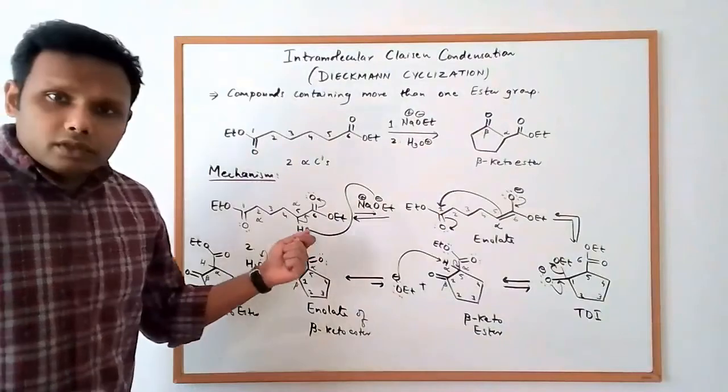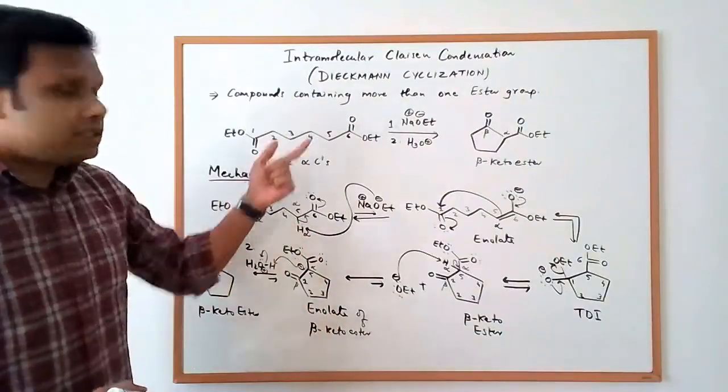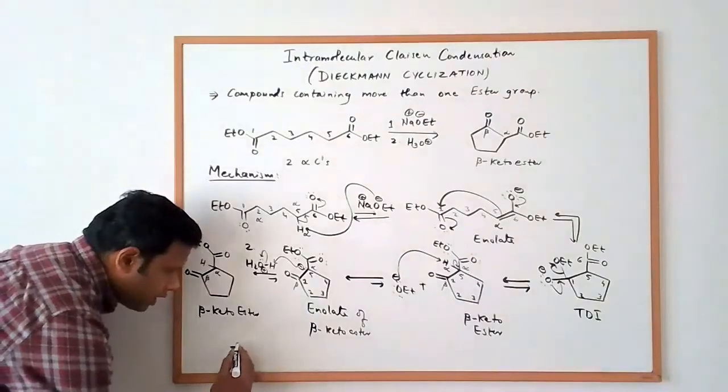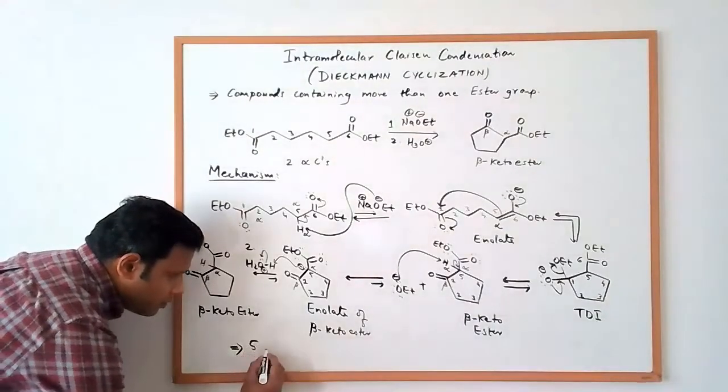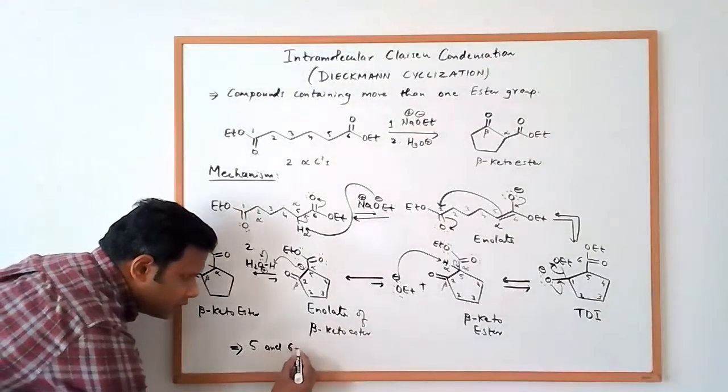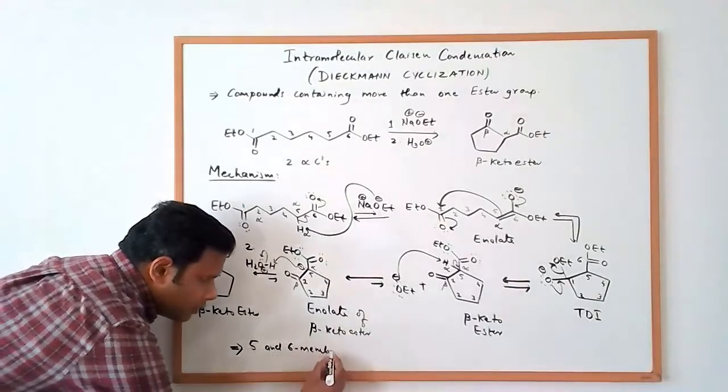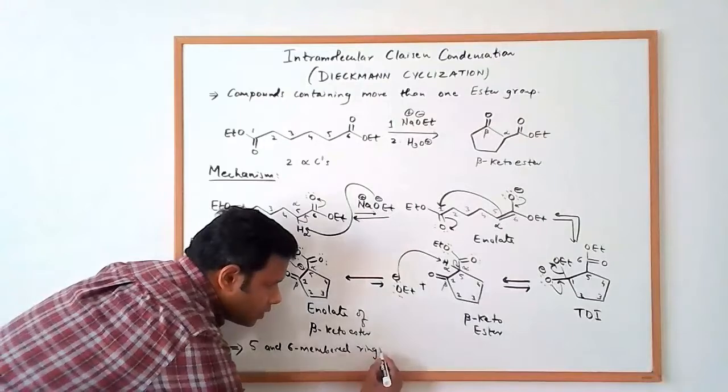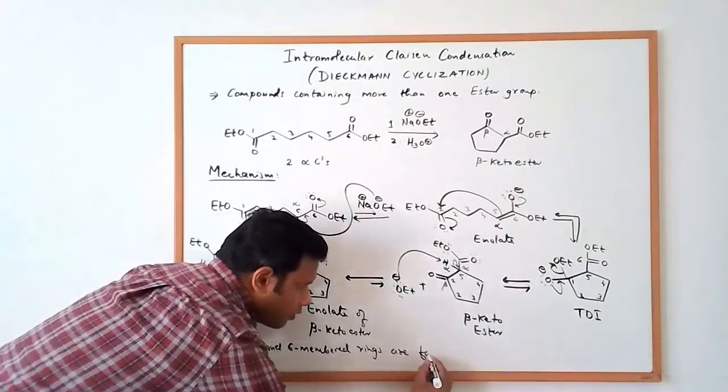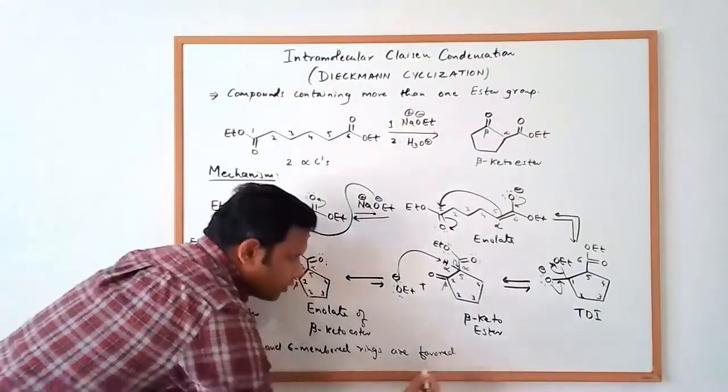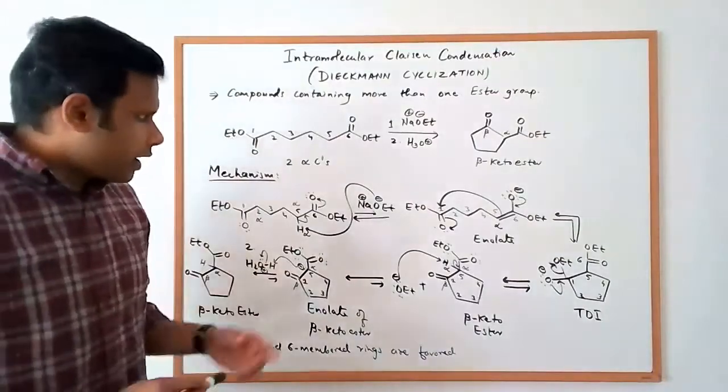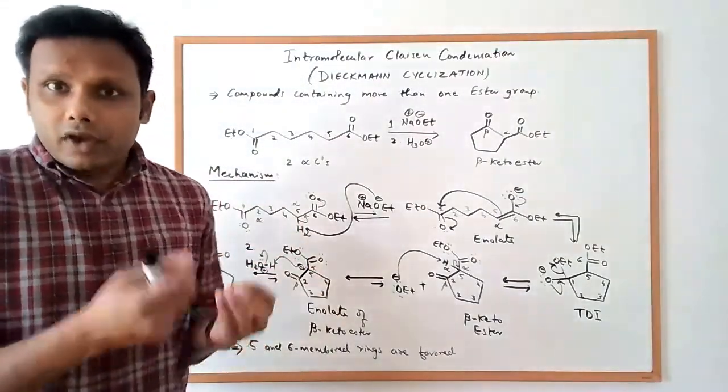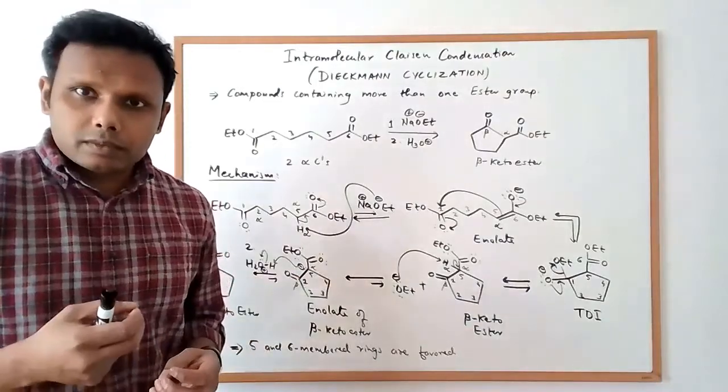Now, important thing to remember in this Dieckmann cyclization is that very similar to the aldol reaction, five and six-membered rings are favored. So when you have several alpha hydrogens or alpha hydrogens that can be deprotonated to give you enolates, you have to look for the product.